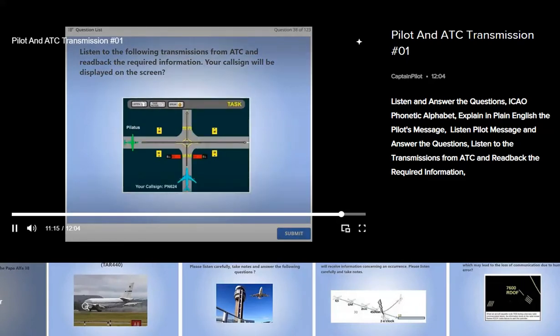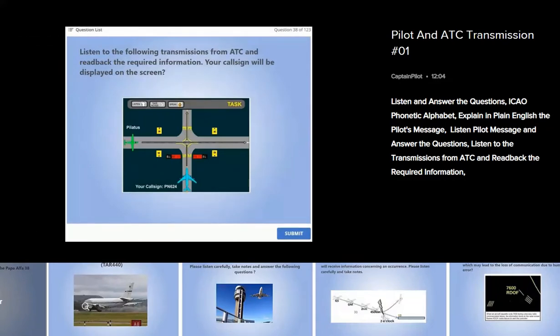Runway 0927. Give way Pilatus on your left. After Pilatus clear cross runway 09 via Bravo taxiway.